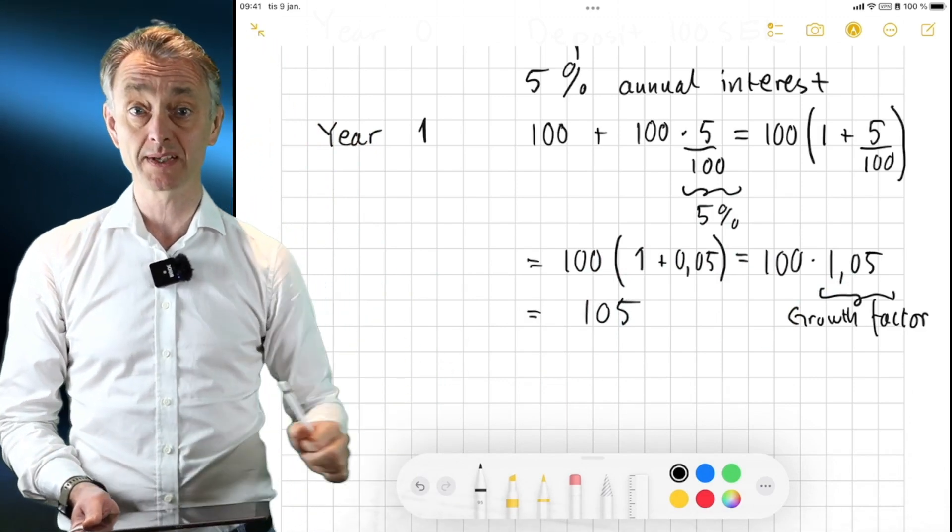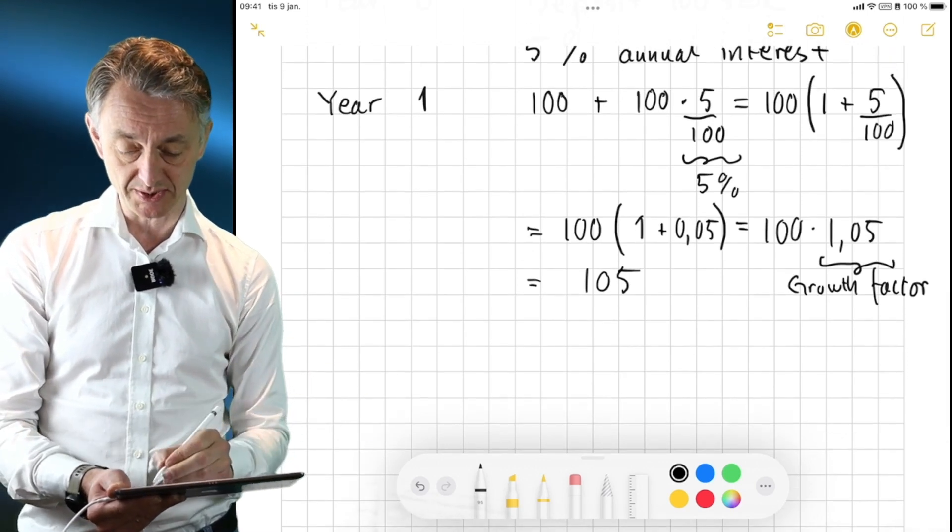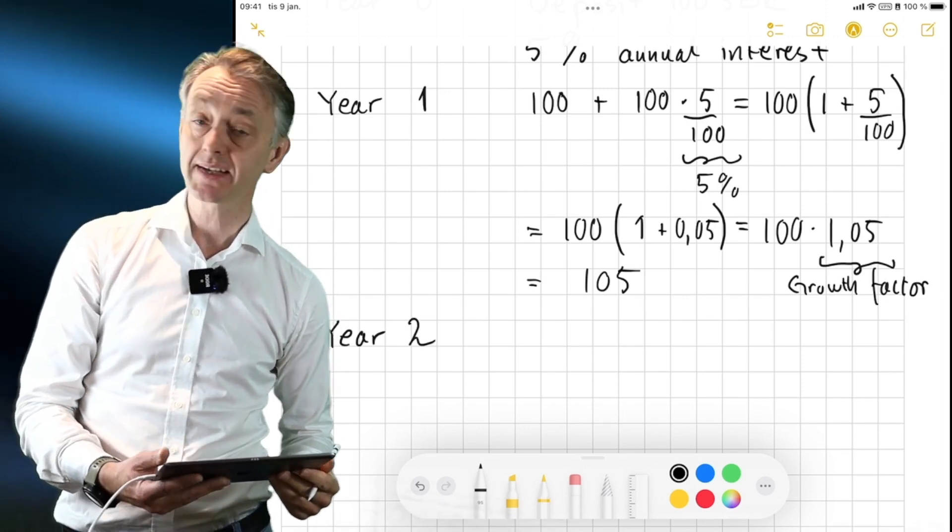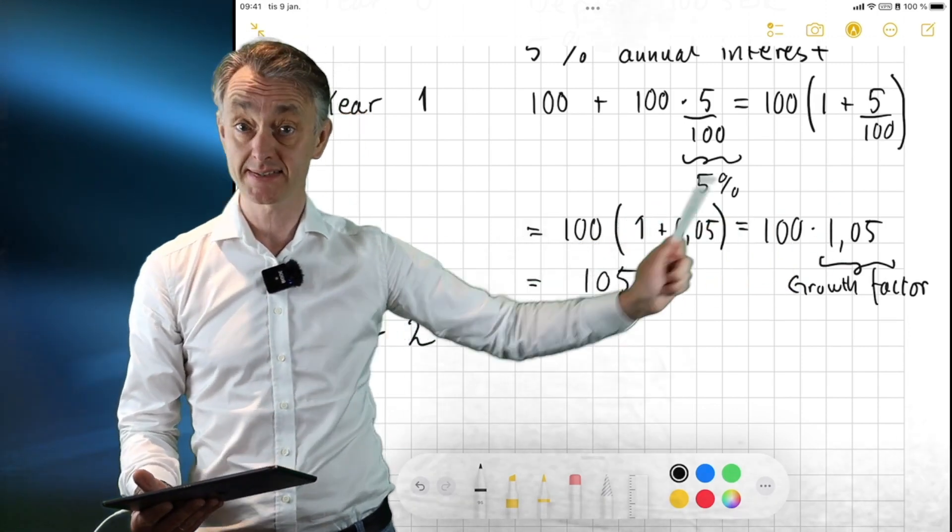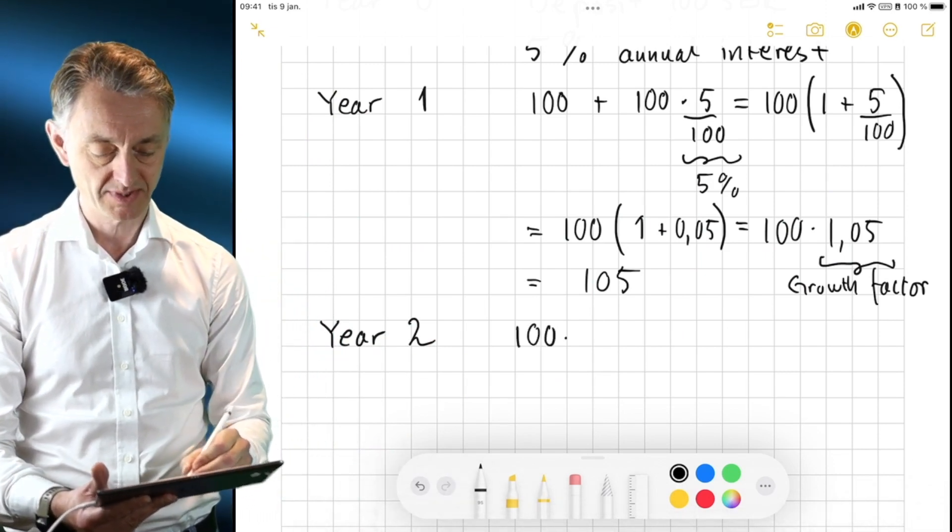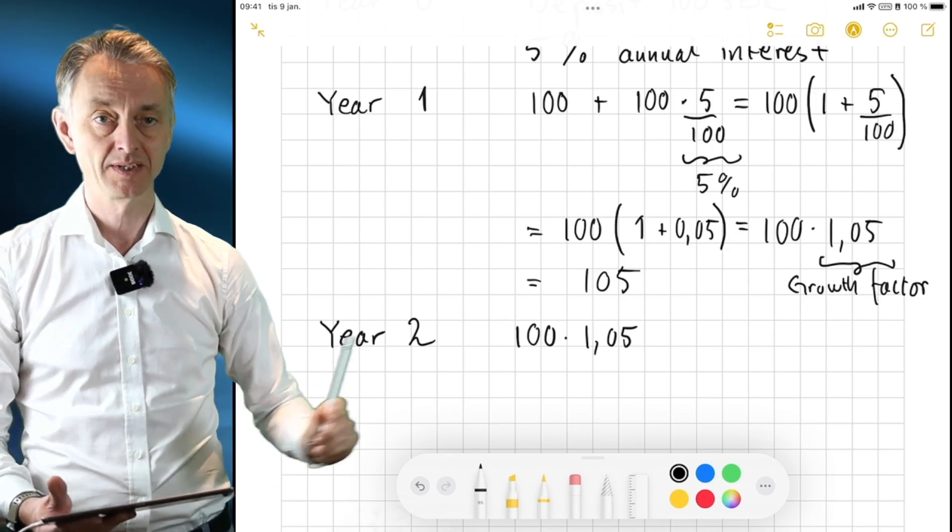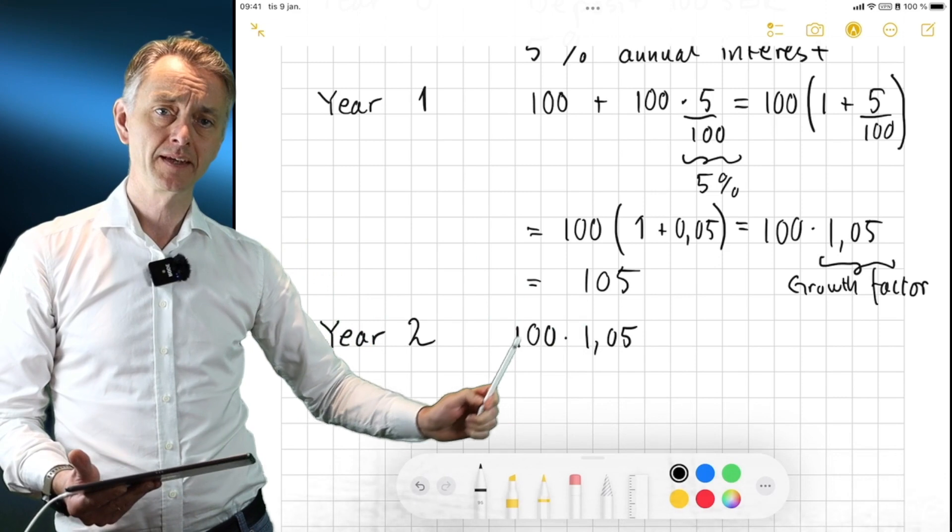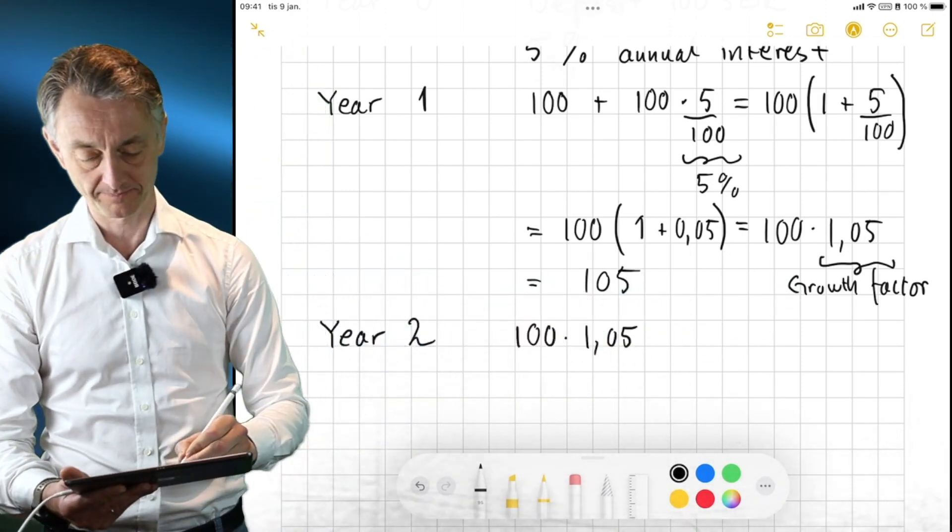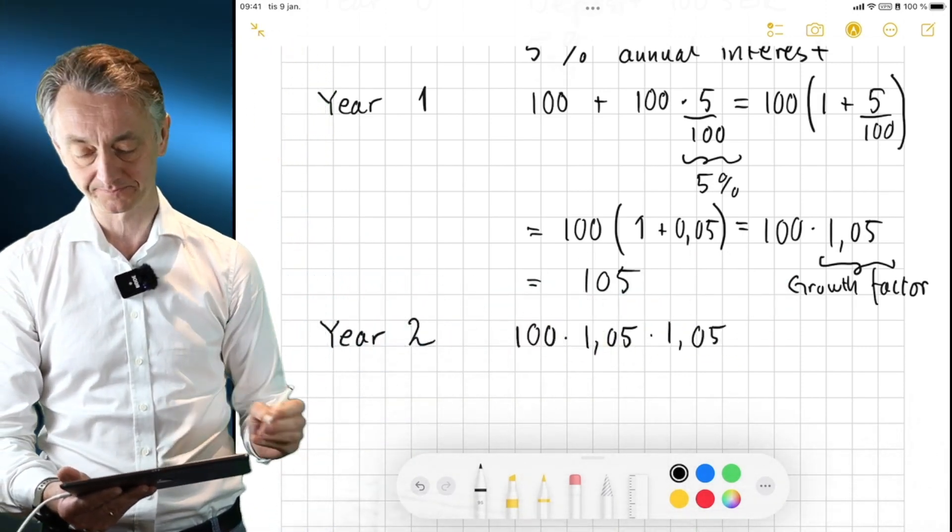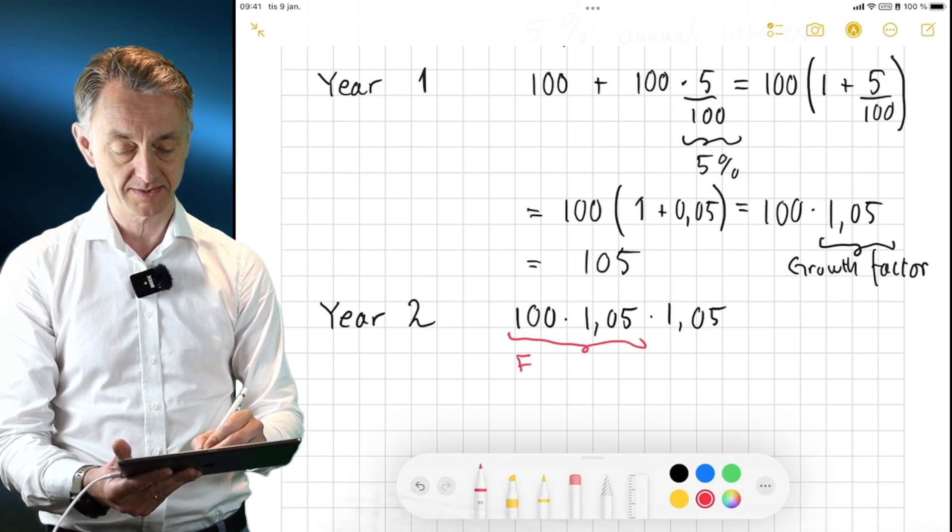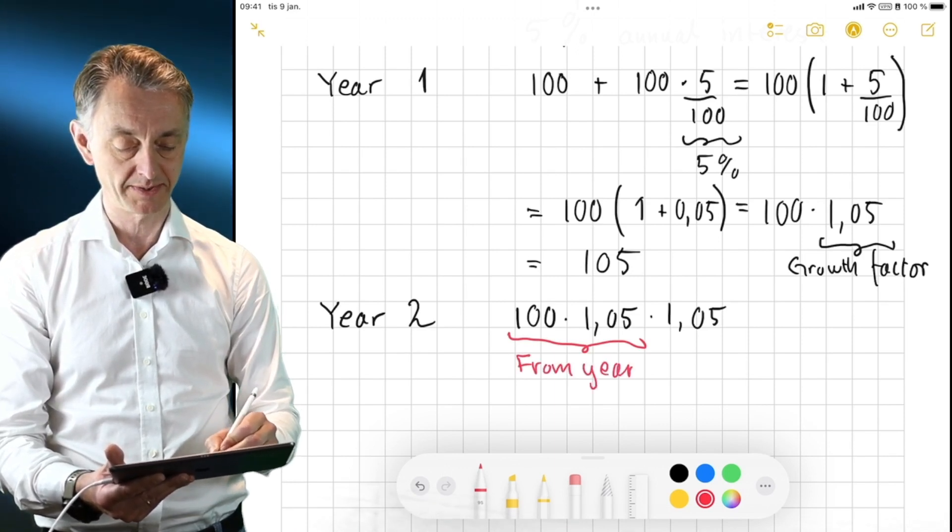Okay, let's now assume I keep my money in the bank for another year. So now we will move down to year two. So how much money will I then have? Well, I know I will have this unless the bank has been robbed. This is from last year, right? So we will start by that. 100 times 1.05. So this is the starting capital when year two started. And so that means that, okay, this money will also grow. So we multiply this with the growth factor. 1.05. So to make it clearer, this is from year one.